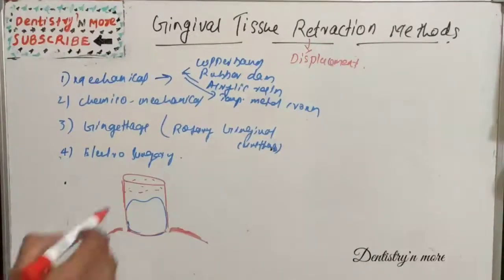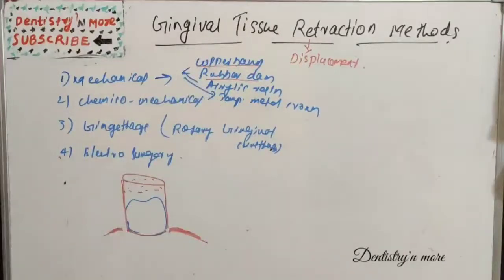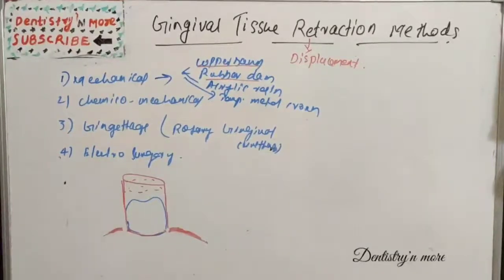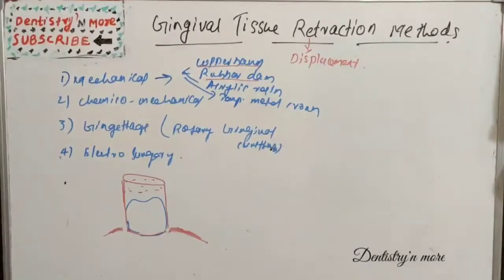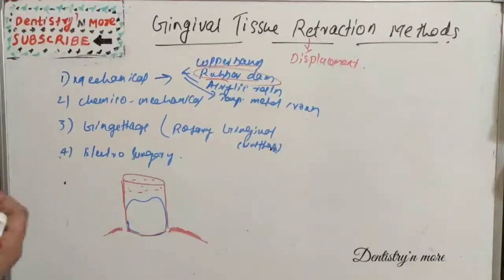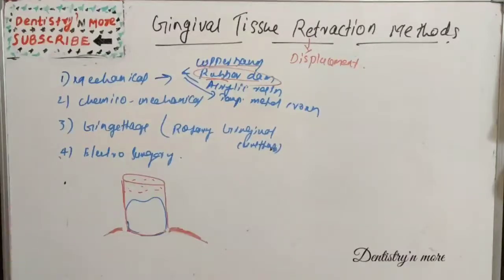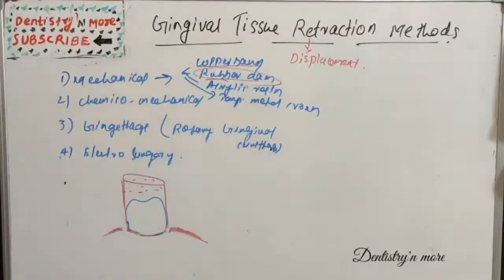The rubber dam method uses the same technique as for restorations. The main advantages are that during tooth preparation it exposes the finish line in a better way and gives good quality impressions due to better fluid control. The problem is it is useful only when a limited number of teeth in one quadrant are being restored and is used in simple preparations with minimal subgingival preparation.